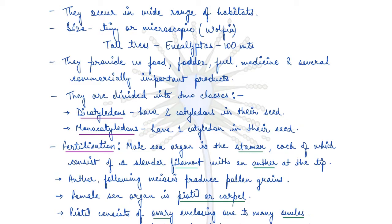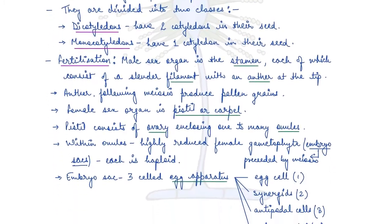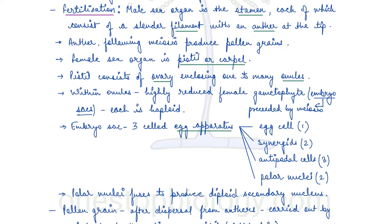Now let's look at fertilization. The male sex organ in the flower is known as the stamen, and each stamen consists of a slender filament with an anther at the tip. The anther, after meiosis, produces pollen grains, which help in the transfer of the male gamete.